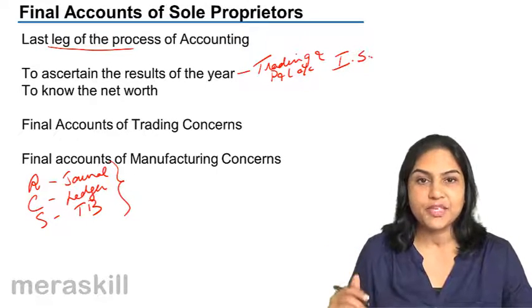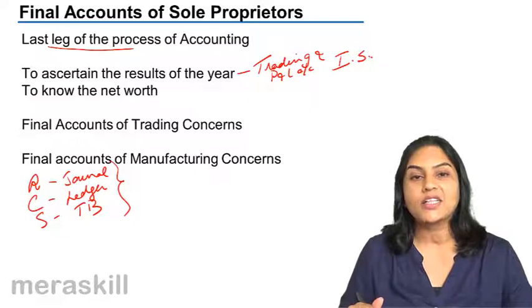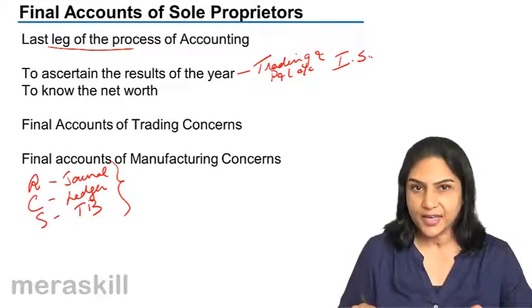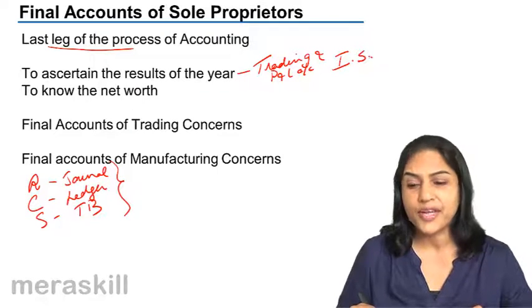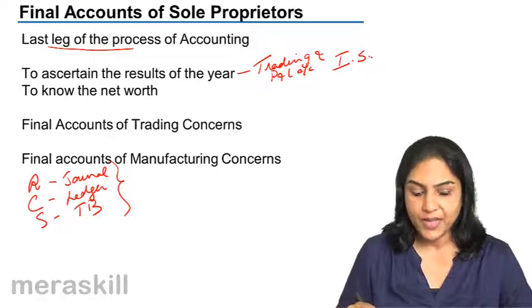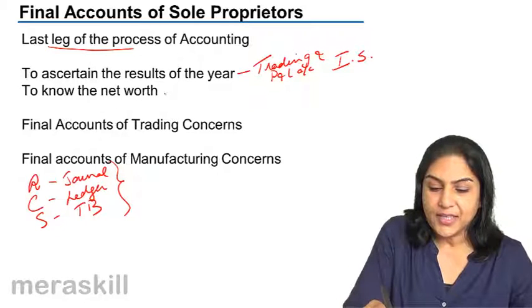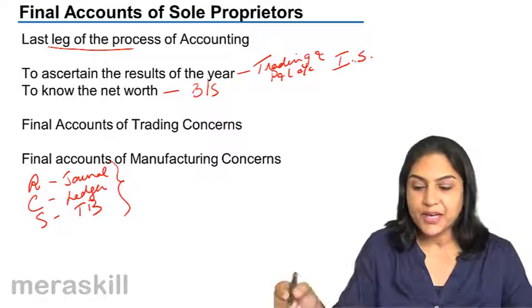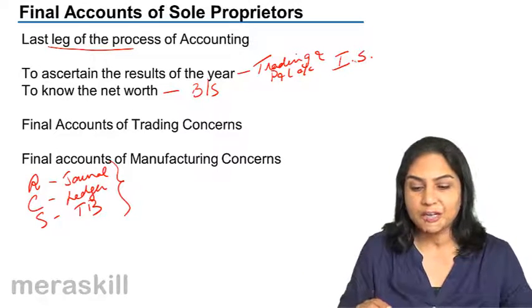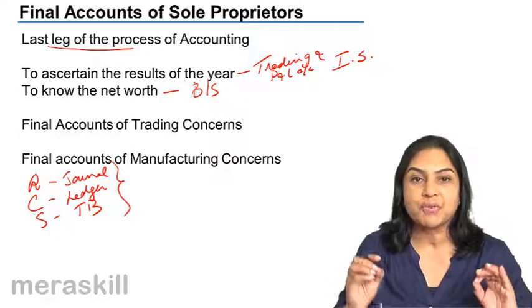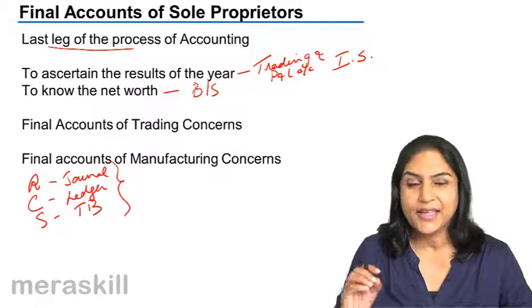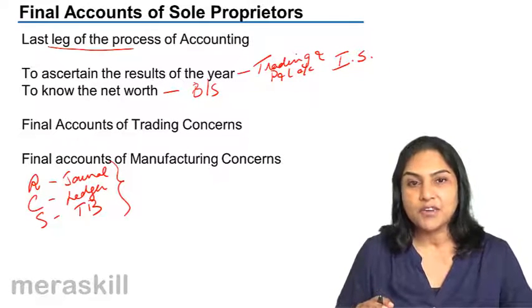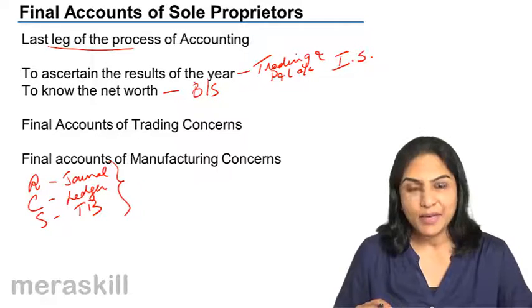The income statement tells us the results of the year — the results of the operations of the trading activity during the year. We know the net profit or the net loss. We also prepare another statement called the balance sheet, which is the position statement — it shows the financial position as on a particular date, consisting of the list of assets and the list of liabilities.